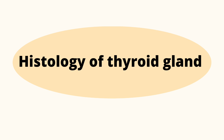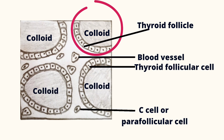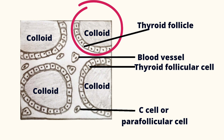The histology of the thyroid gland contains thyroid follicles and connective tissue. Thyroid follicles are made up of thyroid follicle cells that are cuboidal in shape. The connective tissue contains blood vessels, T cells, and parafollicular cells.